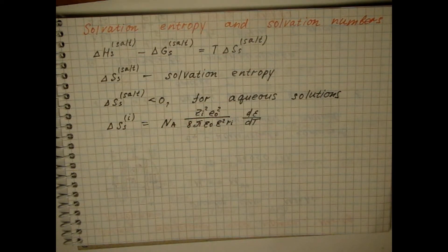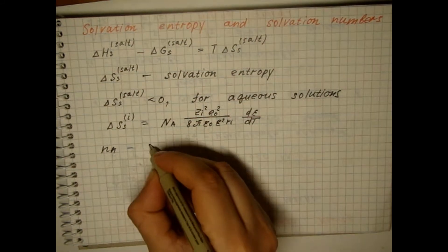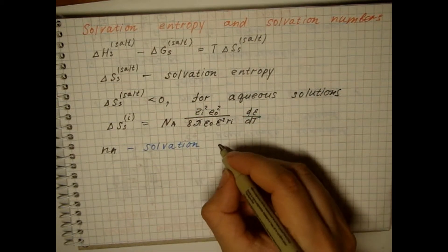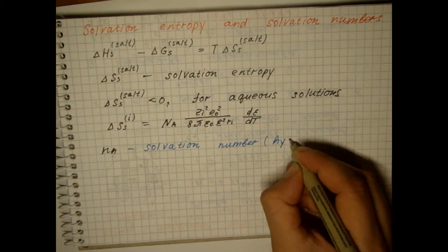The data on the solvation entropy, on the decrease in the dielectric constant and solvent volume in the presence of ions, as well as the mobility of ions in an electric field, indicate that some of the solvent molecules are rather strongly bound to ions. The average number of solvent molecules firmly bound to one ion is called the number of solvation, or the number of hydrations in the case of aqueous solutions.